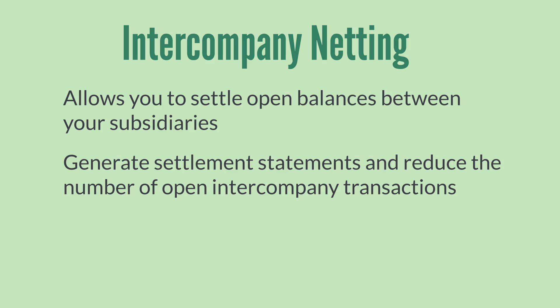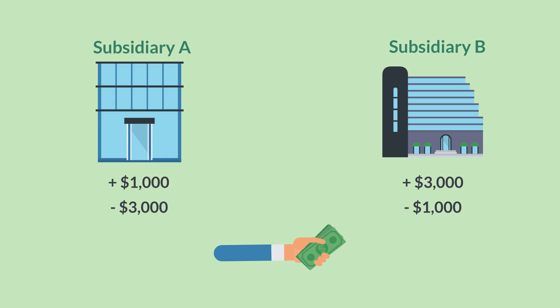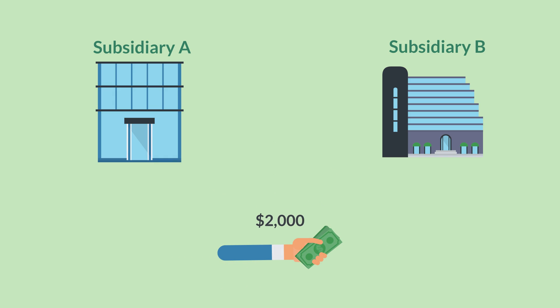Let's look at a simplified example of intercompany netting. Suppose that subsidiary A owes subsidiary B $3,000 and subsidiary B owes subsidiary A $1,000. Instead of both subsidiaries paying each other, when you use intercompany netting, subsidiary A would pay subsidiary B $2,000, which is the net amount owed.